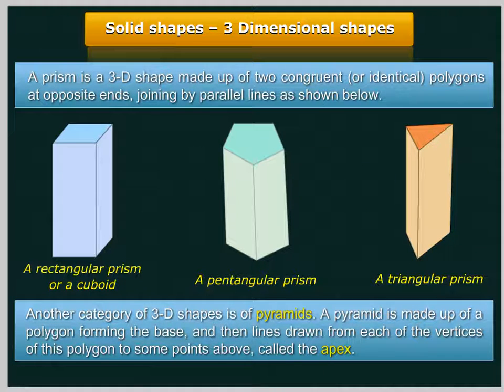Another category of 3D shapes is of pyramids. A pyramid is made up of a polygon forming the base, and then lines drawn from each of the vertices of this polygon to some point above, called the apex.